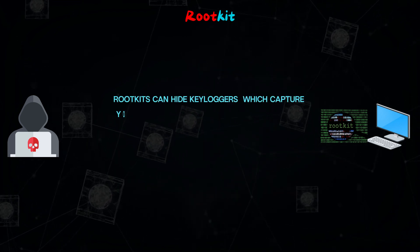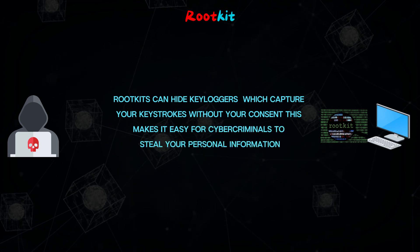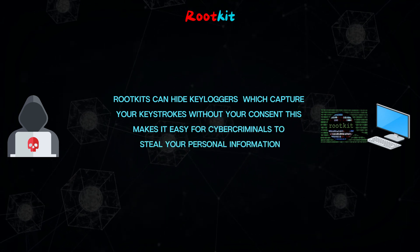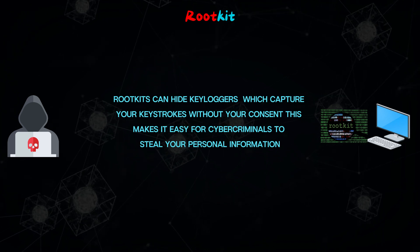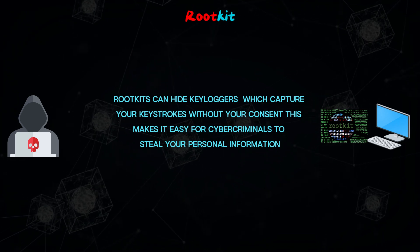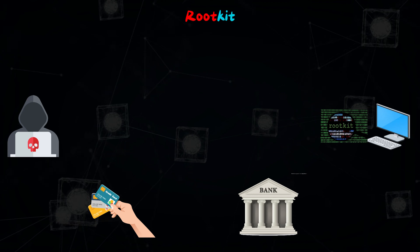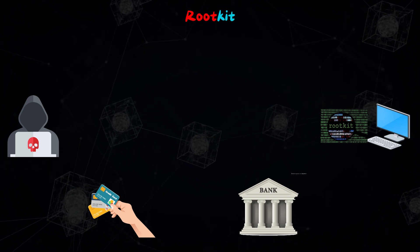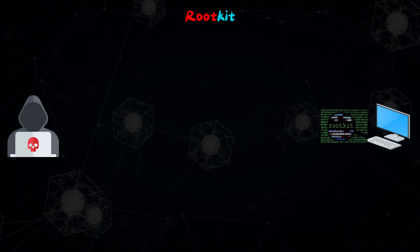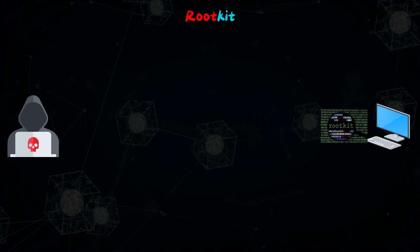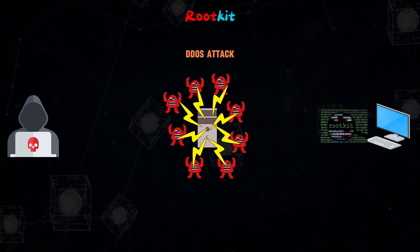Rootkits can hide keyloggers, which capture your keystrokes without your consent. This makes it easy for cybercriminals to steal your personal information, such as credit card or online banking details. Rootkits can also allow hackers to use your computer to launch distributed denial-of-service attacks or send out spam emails.